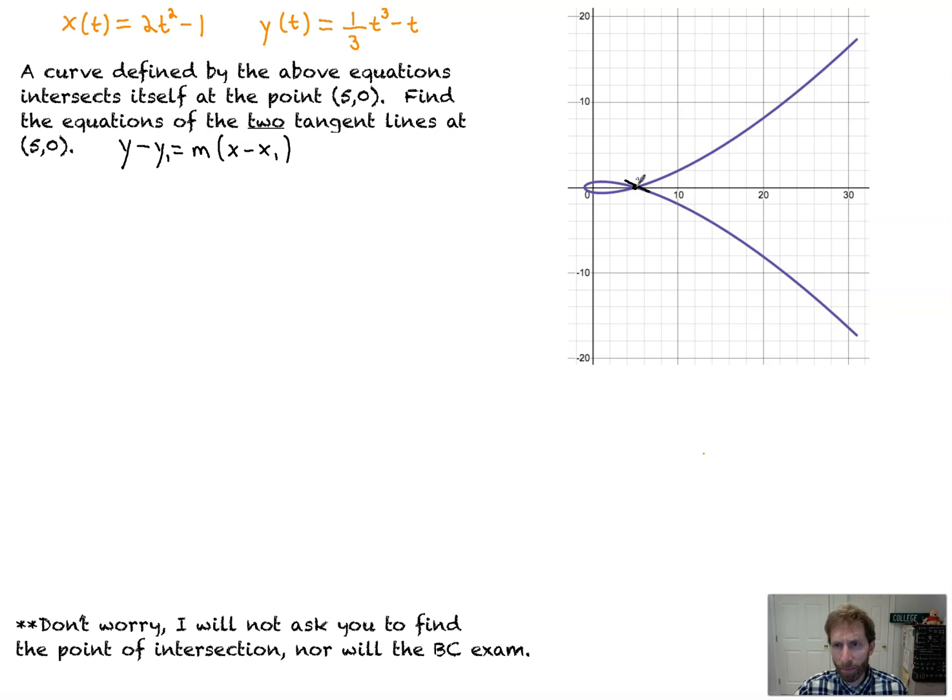Let me see if I can draw a little more accurately. We've got one right here going whoosh, and one right there going up like that. So we've got two tangent lines. Now, how do we find those two tangent lines? We need to find the time when we're at this point.